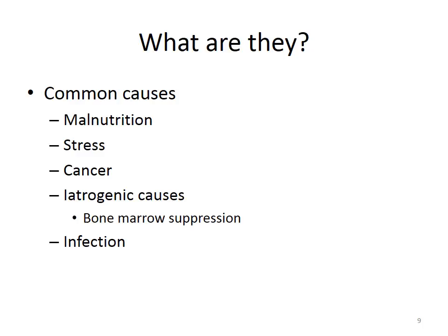Stress increases glucocorticoid release, and glucocorticoids naturally suppress the immune system, leaving us more at risk of secondary immune deficiency. Cancer — particularly Hodgkin's and non-Hodgkin's lymphomas — can deplete lymphocyte populations and increase vulnerability. Iatrogenic causes refer to adverse side effects from medical interventions; surgery and anesthesia are two of the biggest culprits. We may also intentionally suppress the immune system, for example during cancer treatment with chemotherapy agents that target fast-replicating cells.